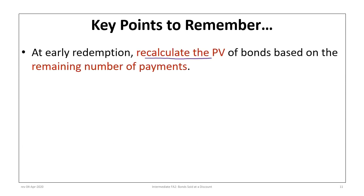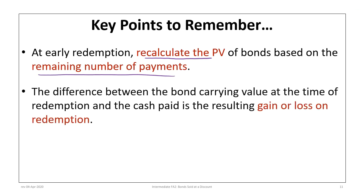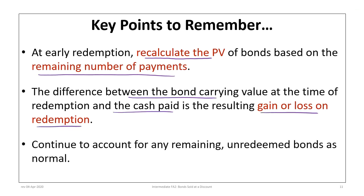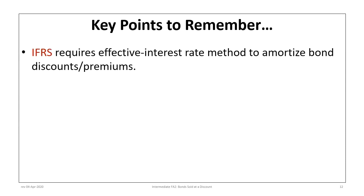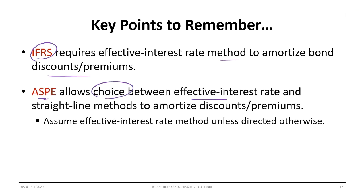For an early redemption, recalculate the present value of the bonds based on the remaining number of payments. The difference between the bond carrying value at redemption and the cash paid is your gain or loss on redemption. Any remaining unredeemed bonds continue as normal. Also note: IFRS requires the effective interest rate method to amortize bond premiums or discounts, whereas ASPE allows a choice between the effective interest rate and straight-line methods. For most courses, assume the effective interest rate method unless directed otherwise.